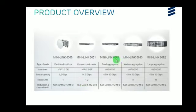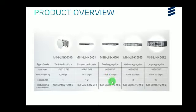Minilink 66691 is a small aggregation node. It has 1 GE and 10 Gigabit Ethernet ports, with a switch capacity of 45 or 90 Gbps. It supports a maximum of 4 radio links. Minilink 66693 is a medium aggregation node and has the same interfaces as the 66691.